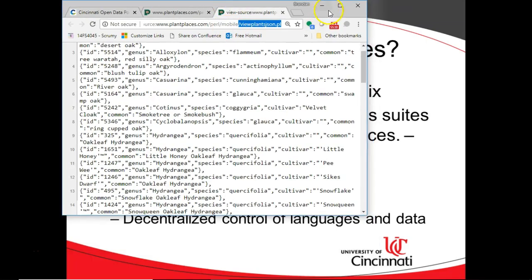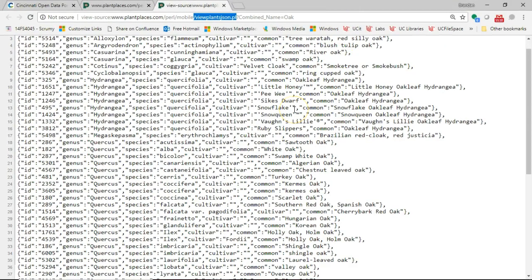Now, decentralized control of languages and data. This is interesting. If we take a look at the endpoint that I just showed you, this is from plantplaces.com. And if you recognize that PL extension, that means it's written in Perl.